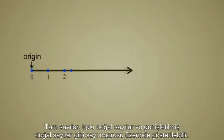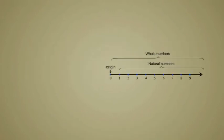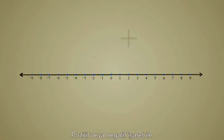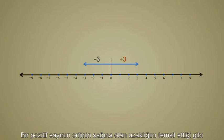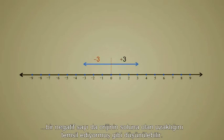Integers can be represented on a number line just like natural numbers and whole numbers, but now the number line must go off to infinity in both directions. With a positive or negative sign, a number can be thought of as representing not only a distance but also a direction. Just as a positive number can be thought of as representing a distance to the right of the origin, a negative number can be thought of as representing a distance to the left.